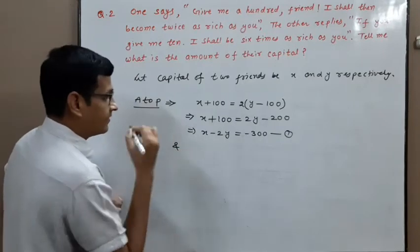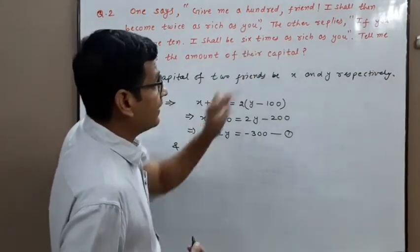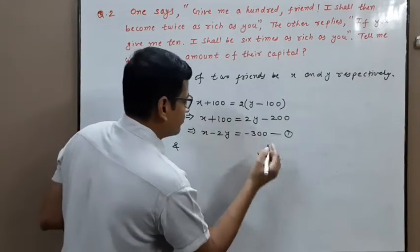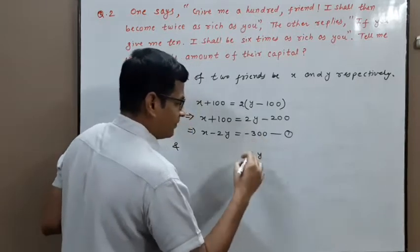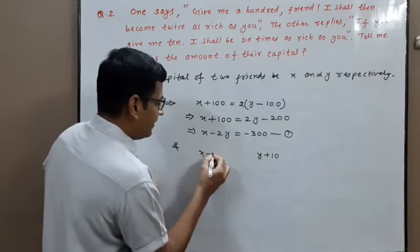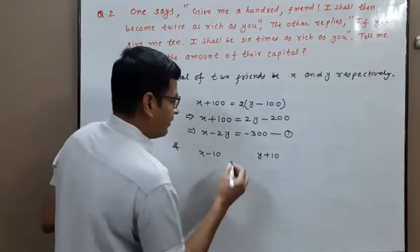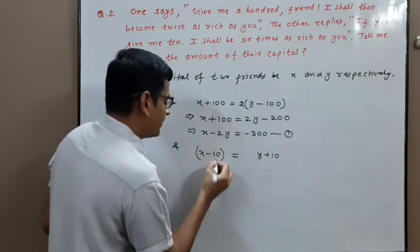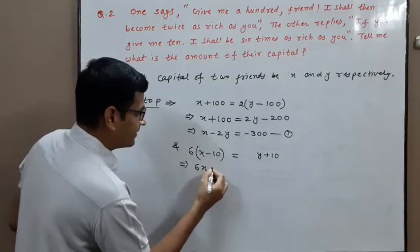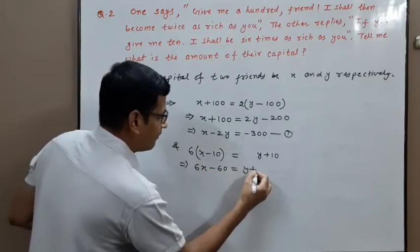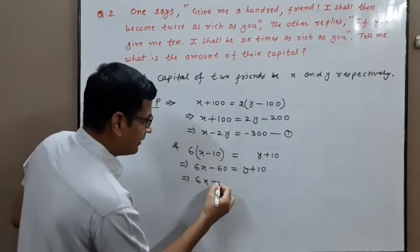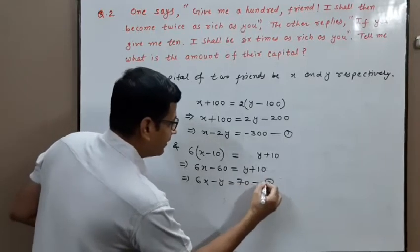For the second condition: A gives 10 rupees to B, so B's capital becomes Y plus 10 and A's capital becomes X minus 10. Then Y plus 10 is 6 times X minus 10. Simplifying: 6X minus 60 equals Y plus 10, so 6X minus Y equals 70. This is equation number 2.